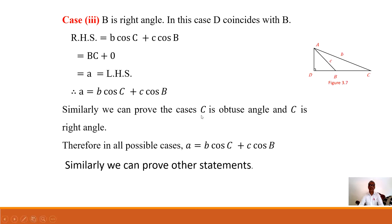Similarly, we can prove the cases where C is an obtuse angle and C is a right angle. Therefore, in all cases, a = b·cosC + c·cosB. Similarly, we can prove the other statements of the projection rule for sides b and c.